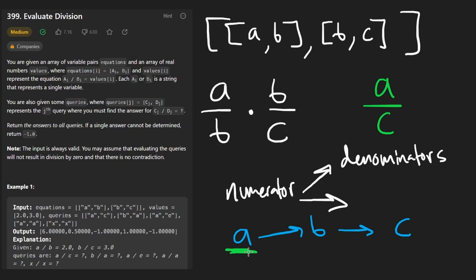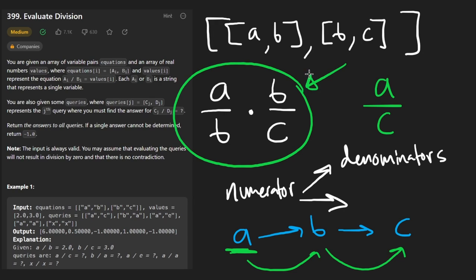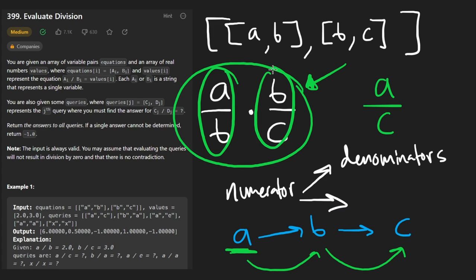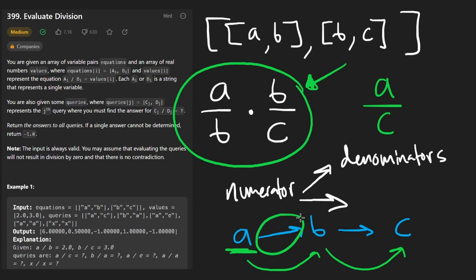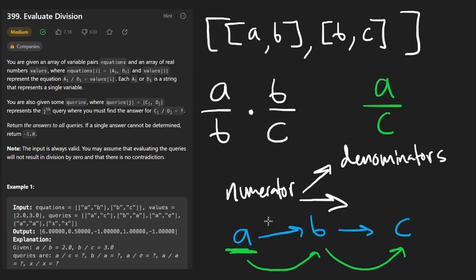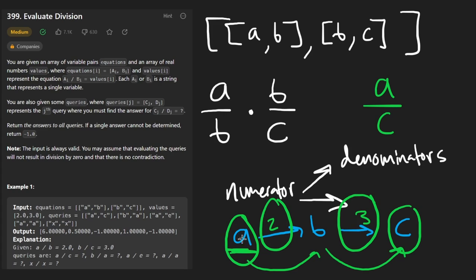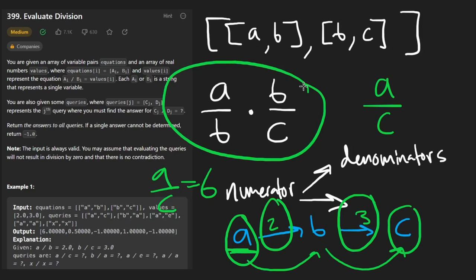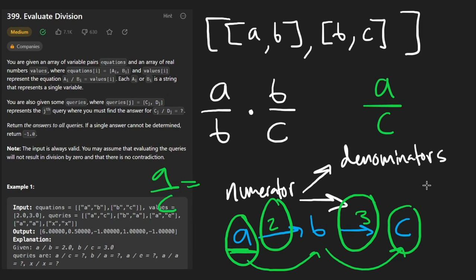If we start at A and traverse the graph to reach B, doesn't that look similar to actually multiplying the equations together? A divided by B, then B divided by C — and what we do with these values is multiply them. So it's good to store the edge weights as the value of each equation: A to B has weight 2, B to C has weight 3. A path from A to C multiplying all edges together gives A divided by C equals 6. This is why we formulate it this way.